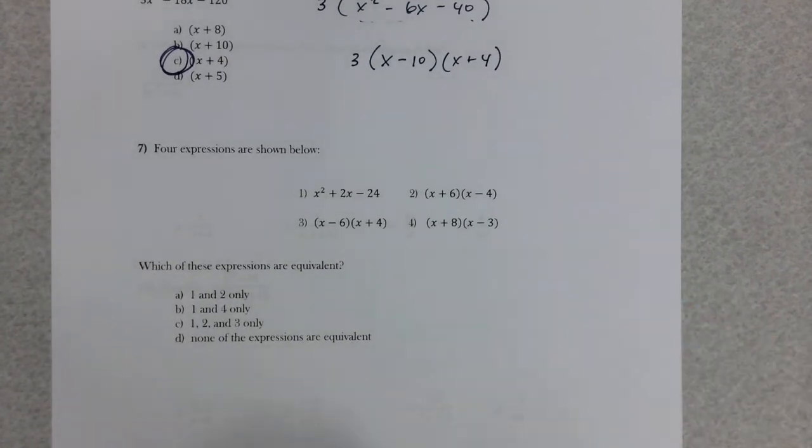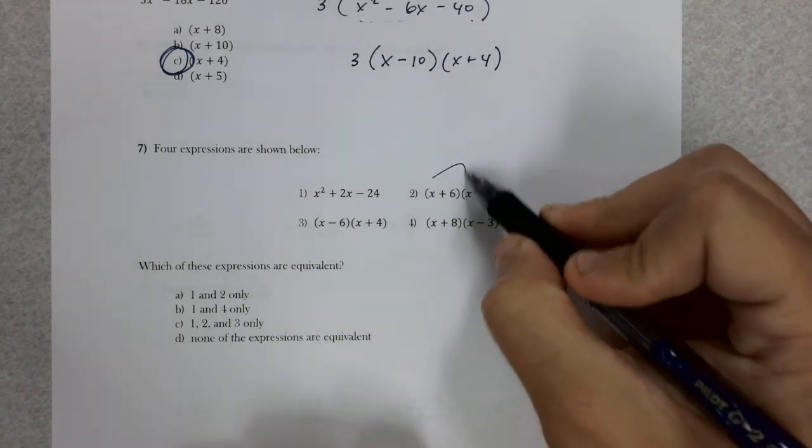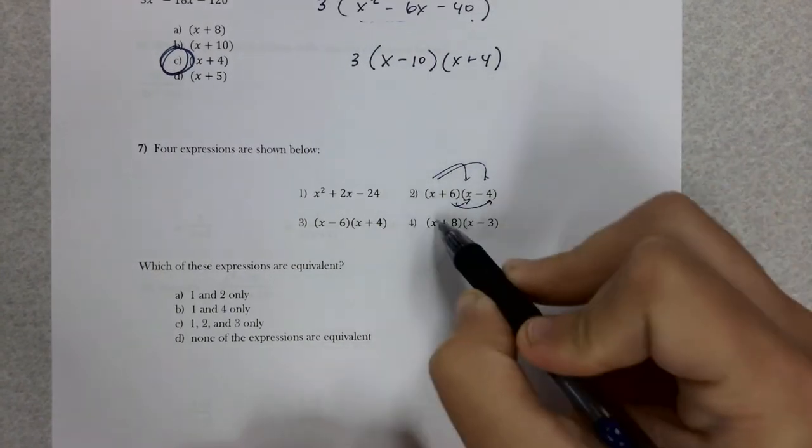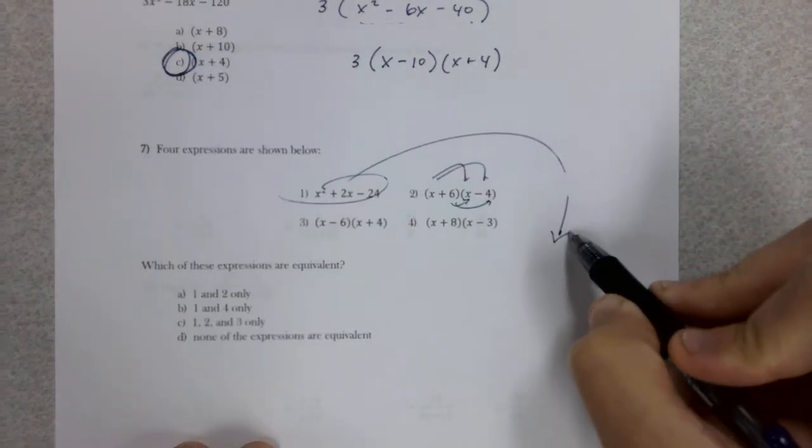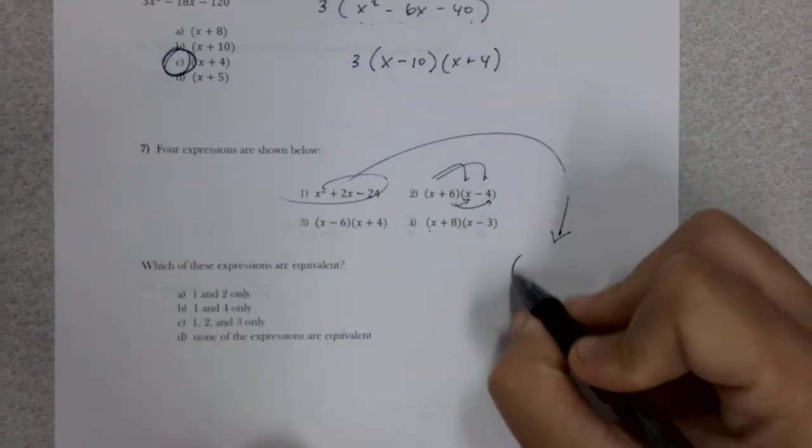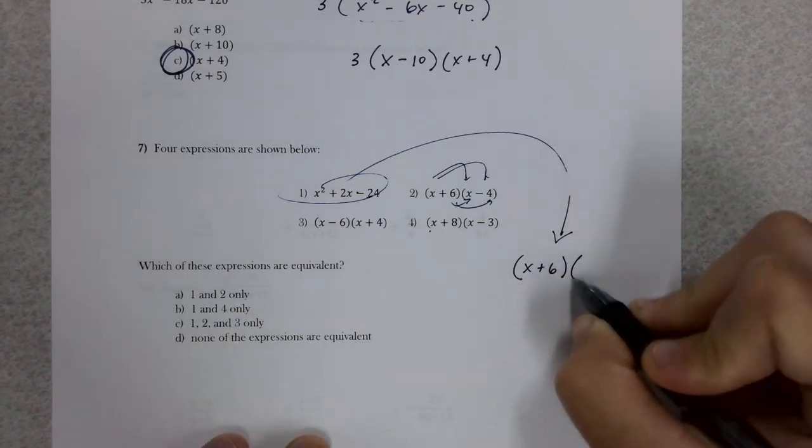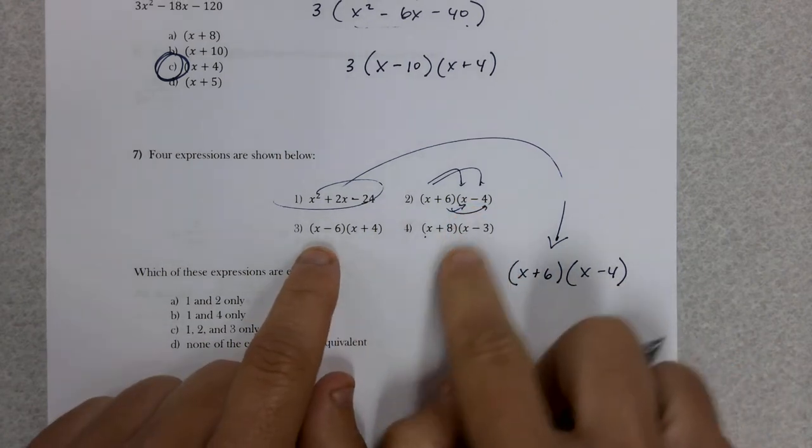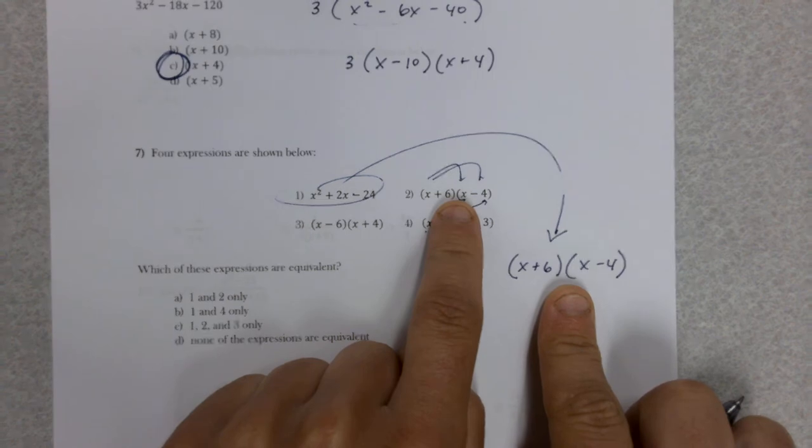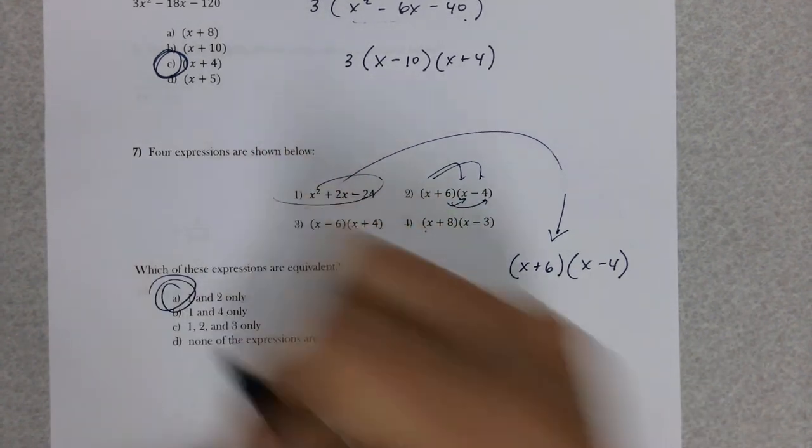Number seven is another one of those questions. It plays on the fact that unit 5 and unit 6 are opposites. You have four expressions and they want to know which ones are equivalent, which ones are the same. If you're not good at factoring, multiply 2, 3, and 4. But since we just did unit 6, I think you can factor this. What multiplies to give you negative 24 and adds to give you 2? That would be 6 and negative 4. Factor one question rather than multiplying three questions, and you notice 1 and 2 are the same. Letter A, 1 and 2 only.